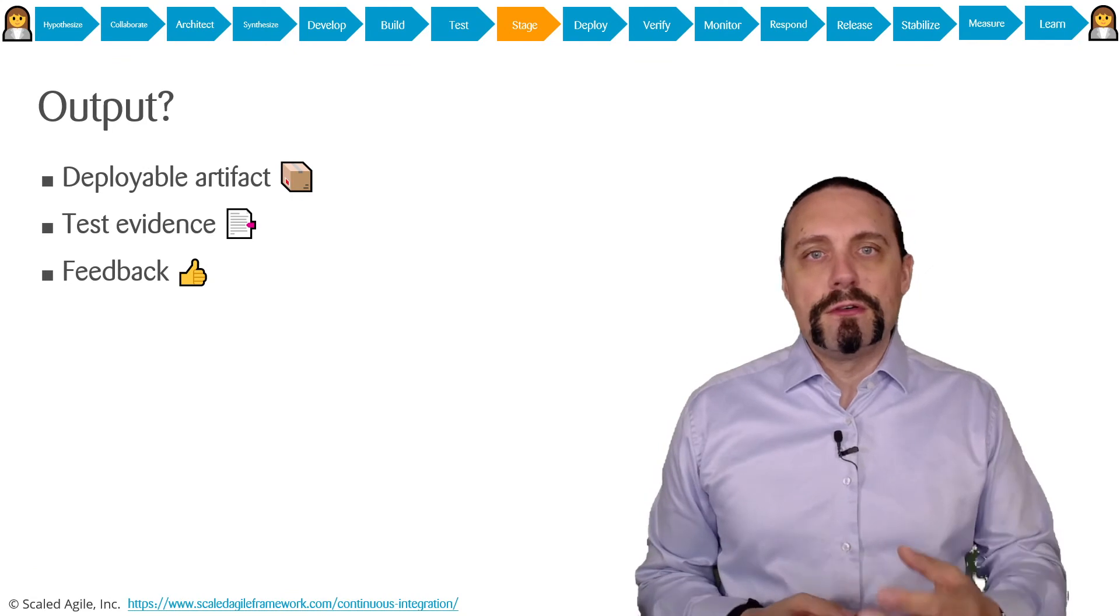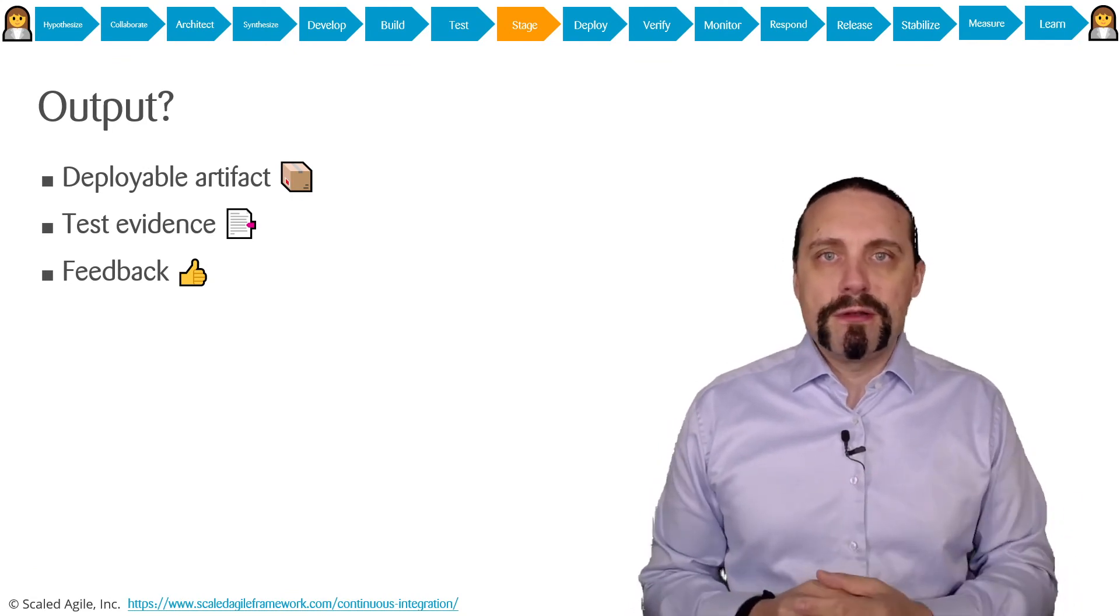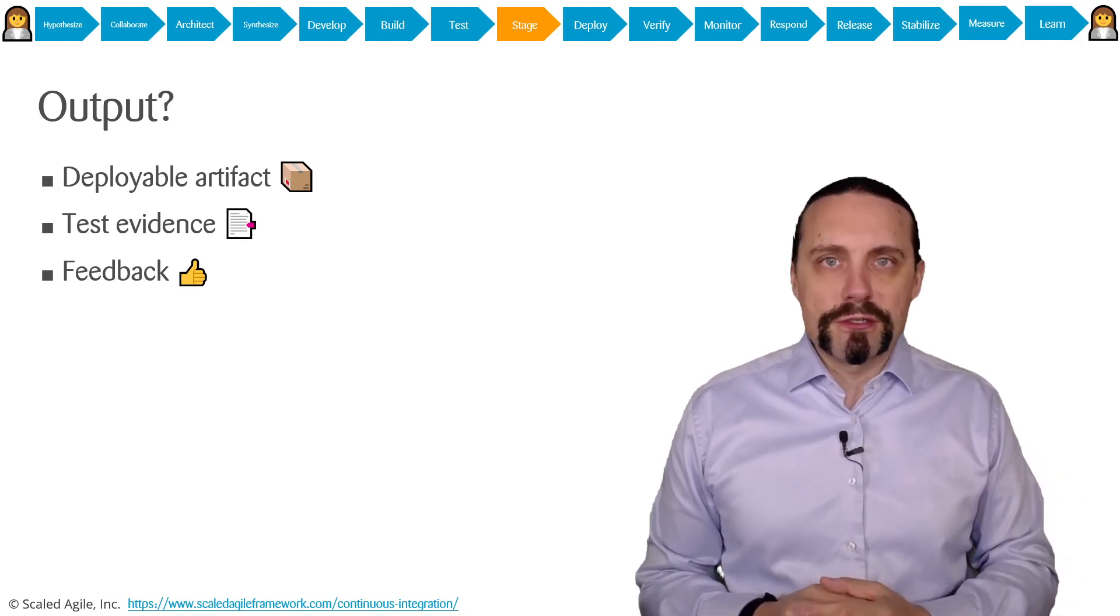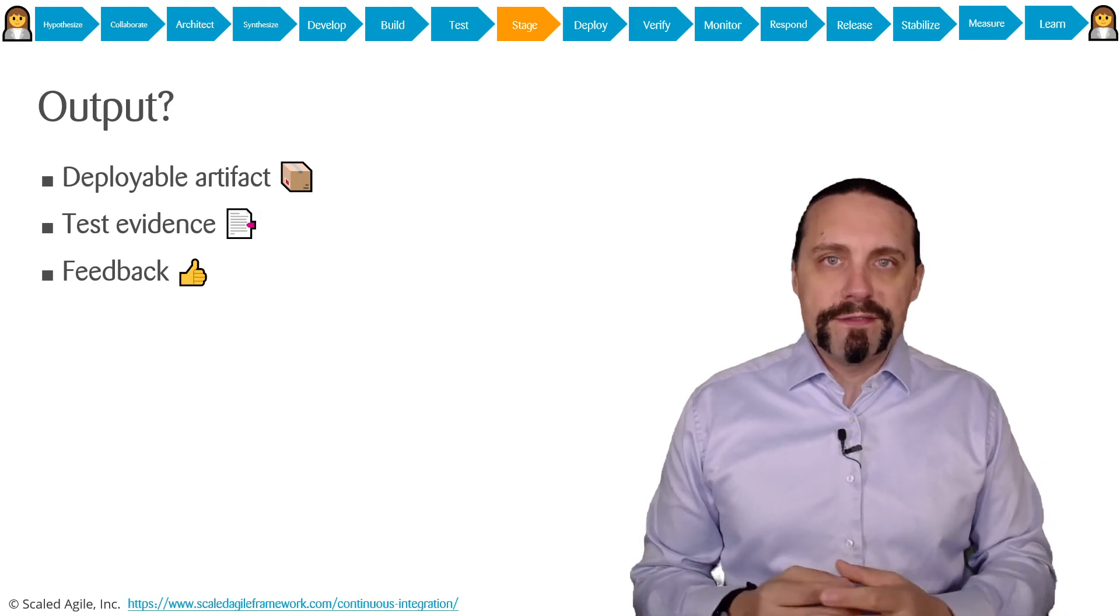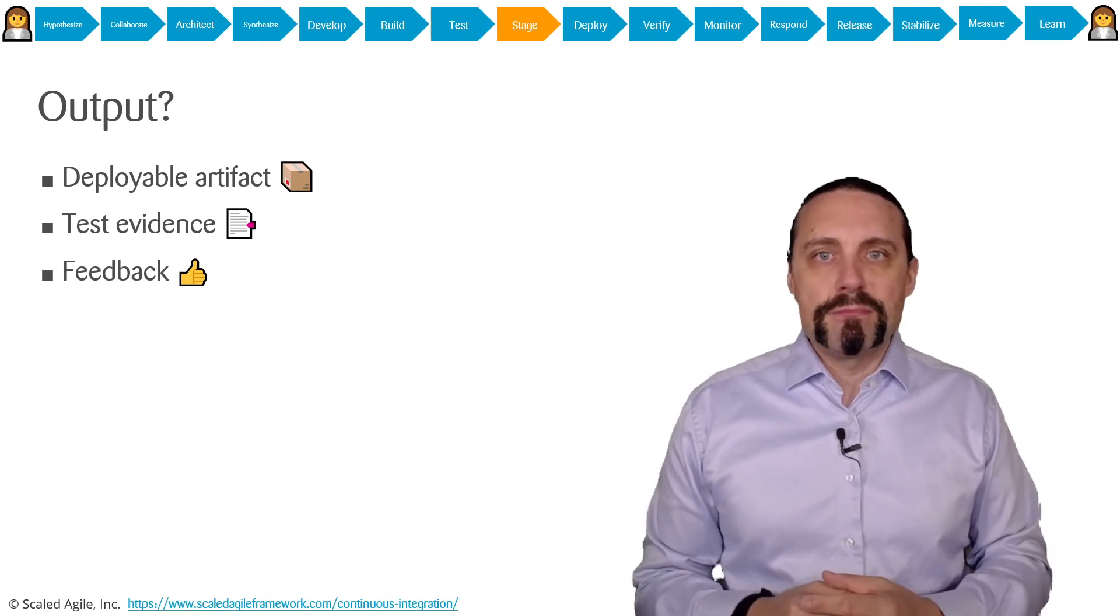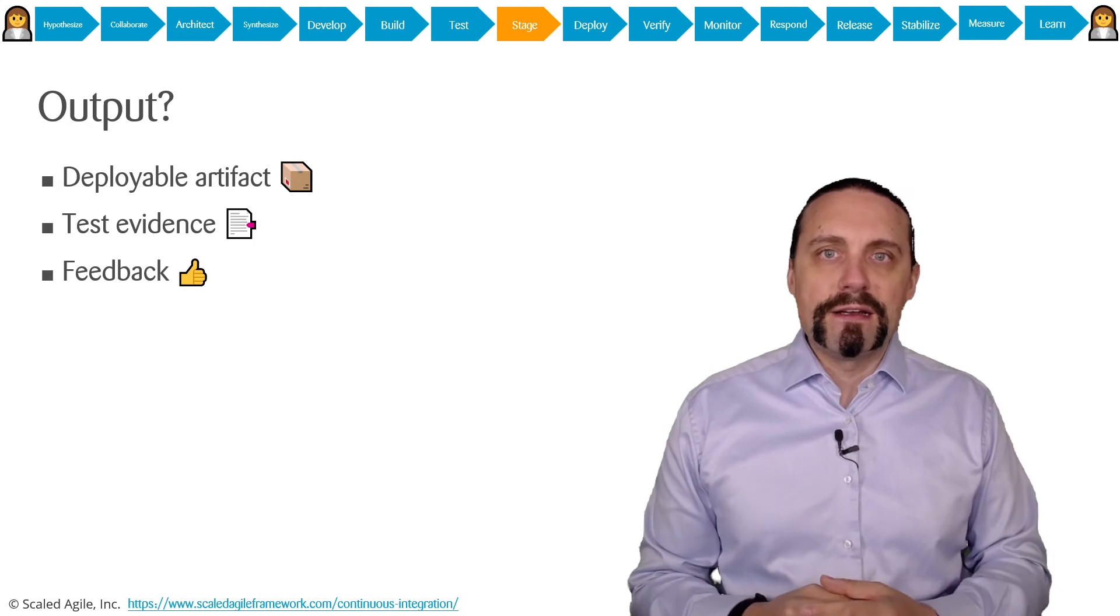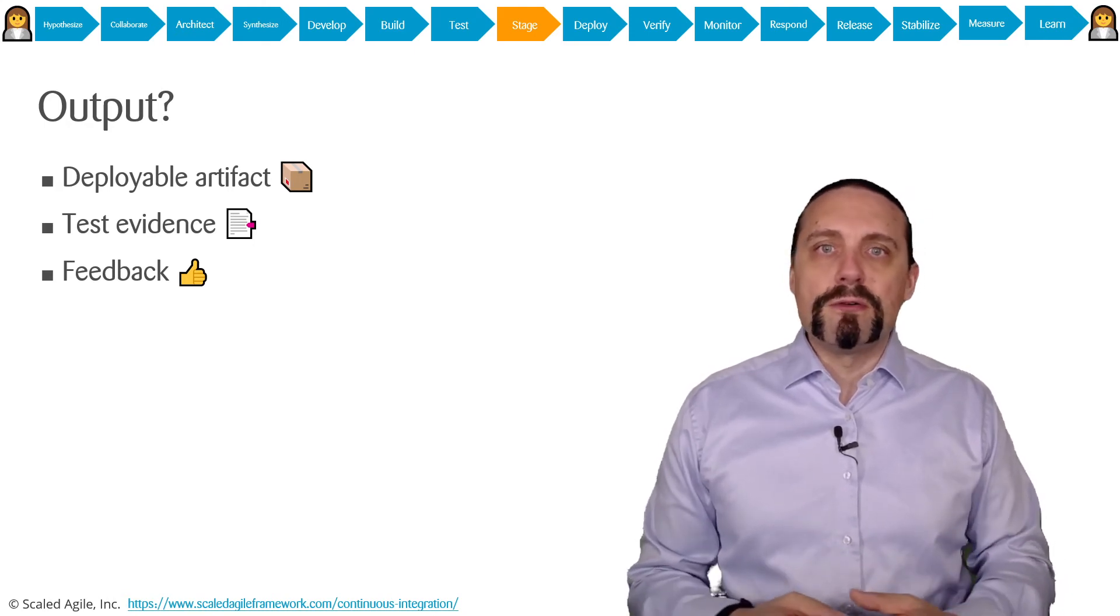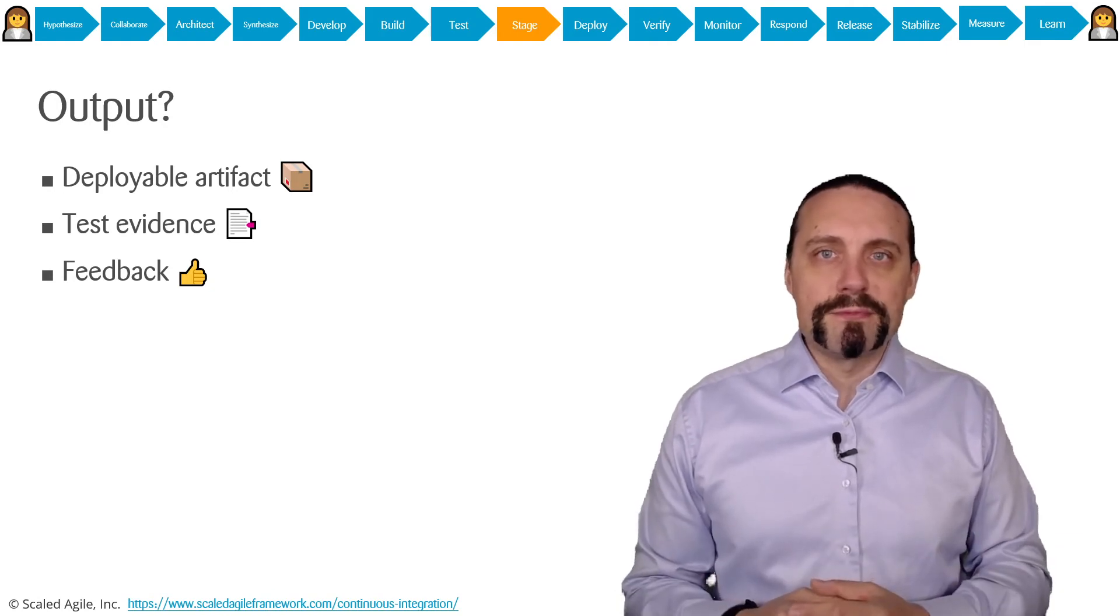The output of the stage step is that we have a deployable artifact which is now ready for production. We also have got all of the test evidence so this is important when we have regulations in place and we also have gathered feedback from our stakeholders in the system demo but also on the stage environment with the user acceptance test.